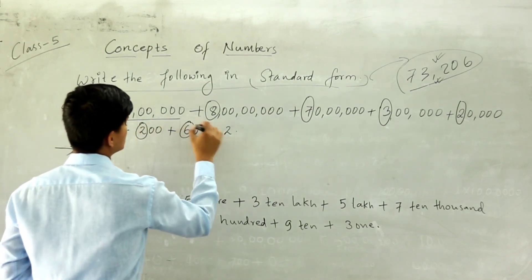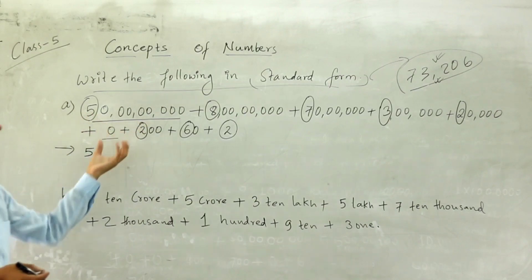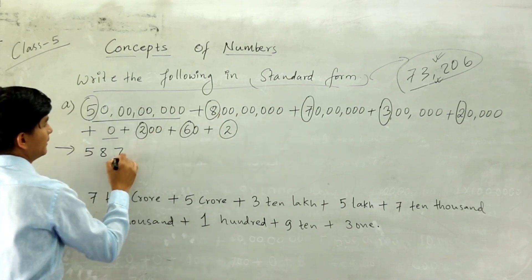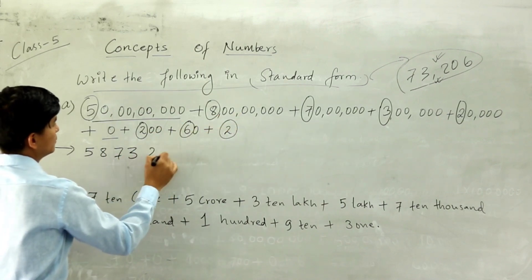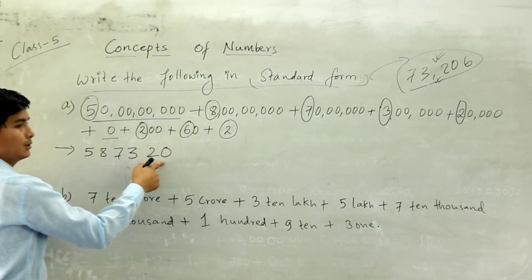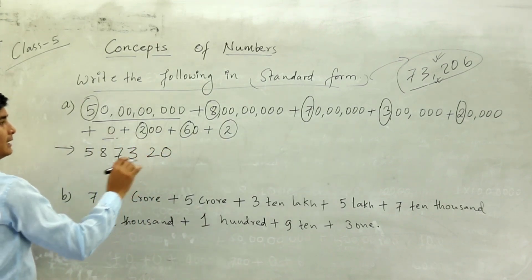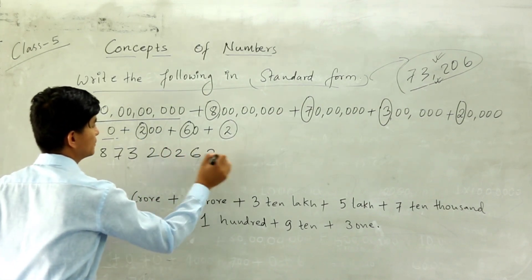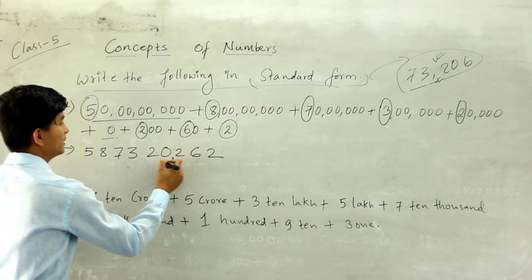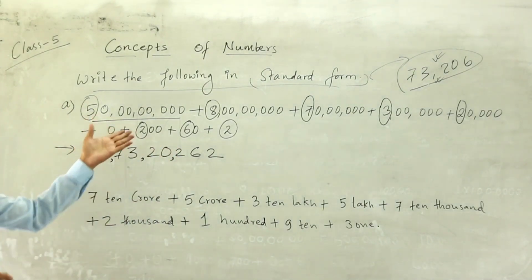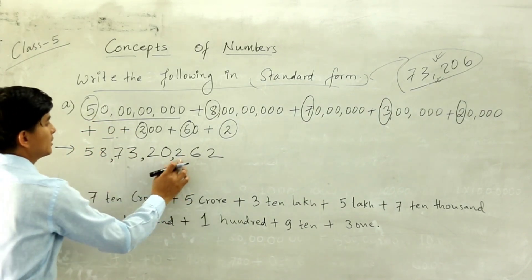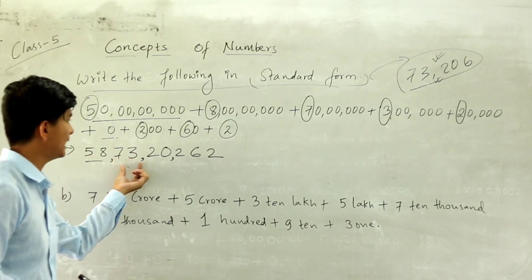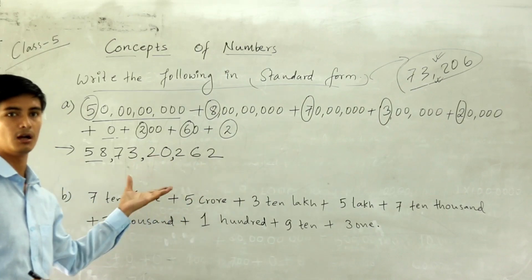After placing all the digits in order, you have to put the commas in the correct positions. Then check whether it is correct: count ones, tens, hundreds, thousands, ten thousands — it comes to 58,73,262. Count again: one, two, three, four, five, six, seven, eight — yes, the digit count is correct. Like this you can verify if the order is correct.